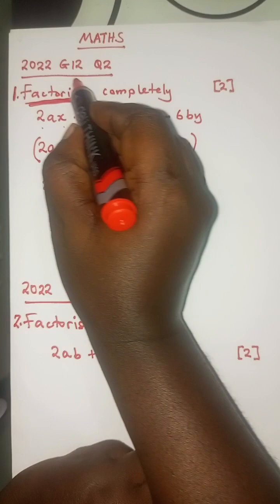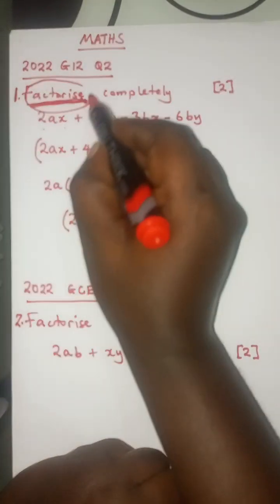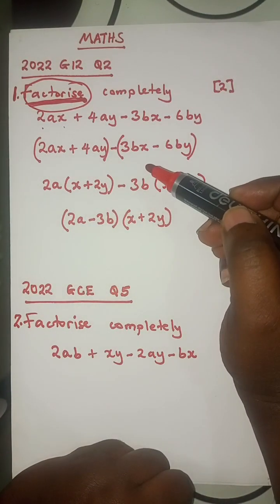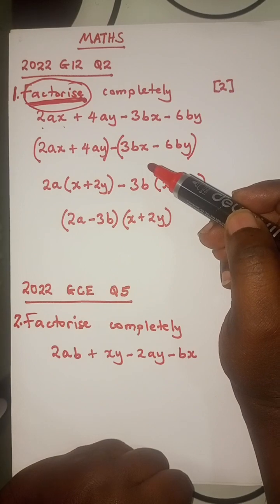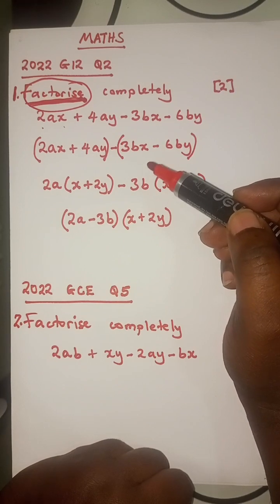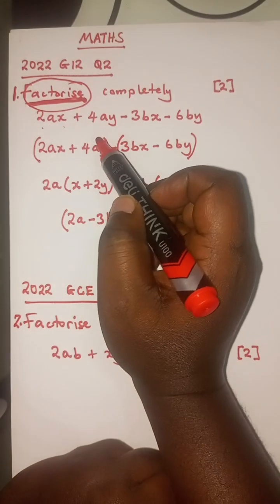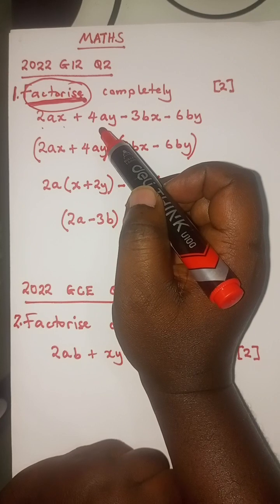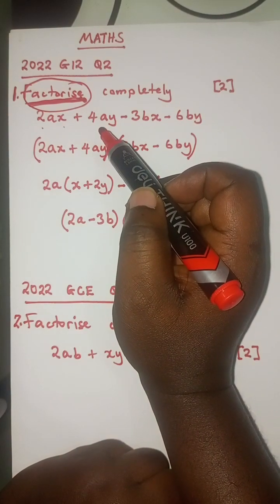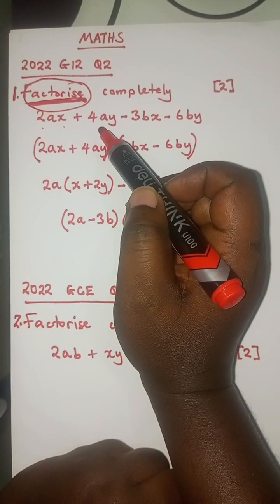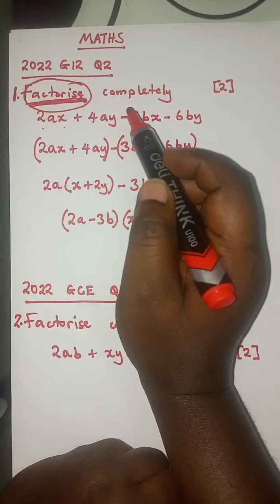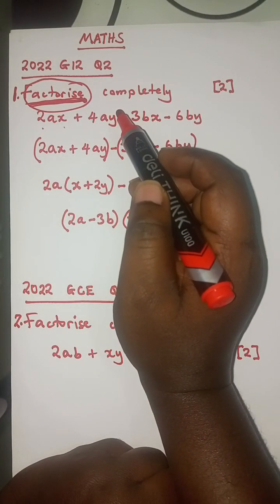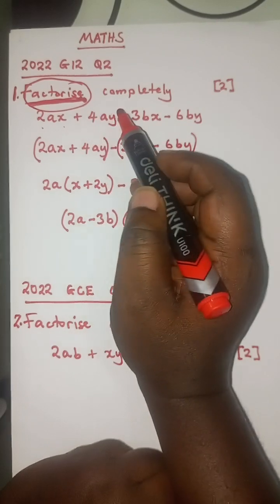Now remember, when we say factorization, we are talking about four types of factorization. So immediately you are given a question, you have to identify the type of factorization you are dealing with. We have what we call common factorization. We also have factorization by grouping.